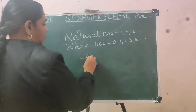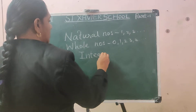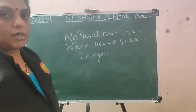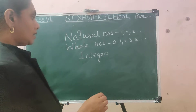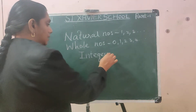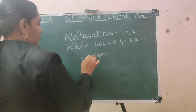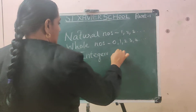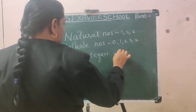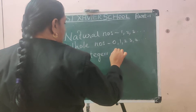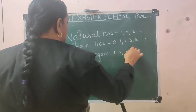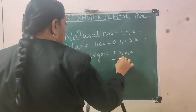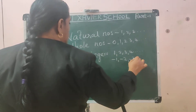Next comes integers. What are integers? The positive numbers and the negative numbers are called integers. Positive numbers: 1, 2, etc. And the negative numbers are minus 1, minus 2, minus 3, and so on.